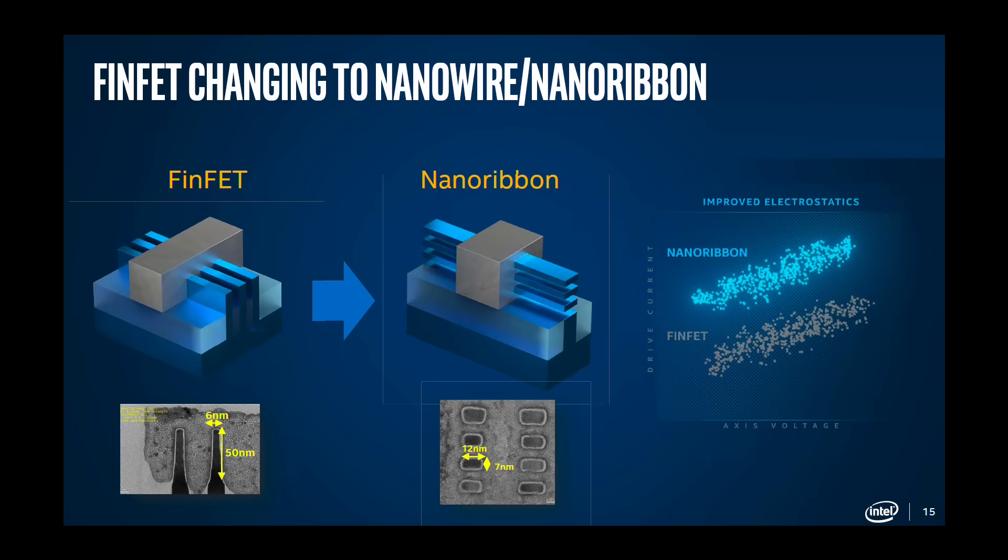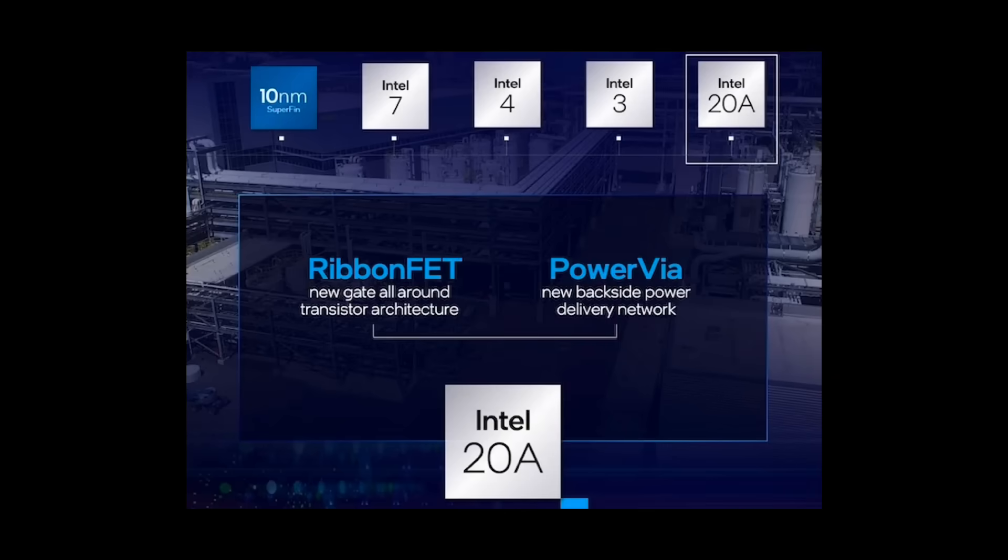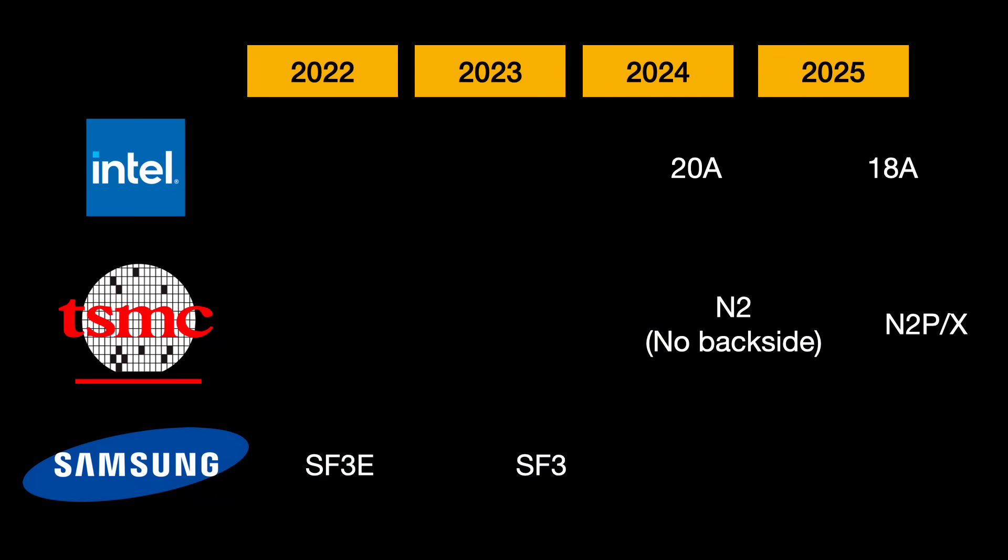Intel's named their GAFET offering RibbonFET, or NanoRibbon, or whatever have you. The first process node of theirs to use it is 20A, an internal node scheduled for mid-2024. After that is 18A, the big process node that everyone expects will bring Intel back to the leadership position. Intel's GAFET processes, 20A and 18A, include a second interesting innovation, backside power. This is where we move the power lines to underneath the silicon substrate, opening additional space. TSMC's N2 will not have backside power until about a year later. With their second-generation N2 processes, N2P and N2X. Many people see this as a major advantage for Intel.